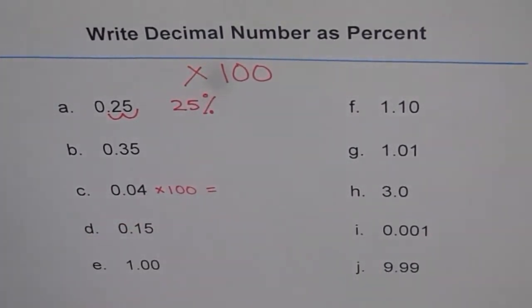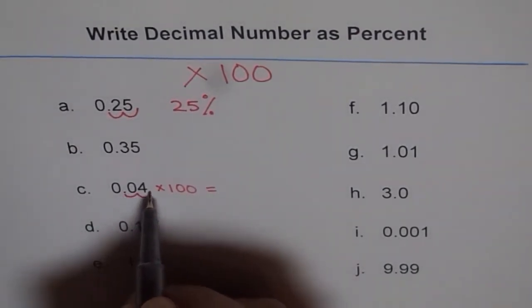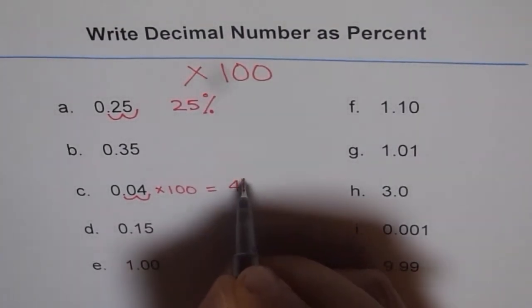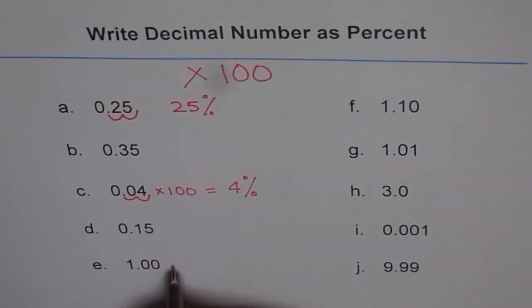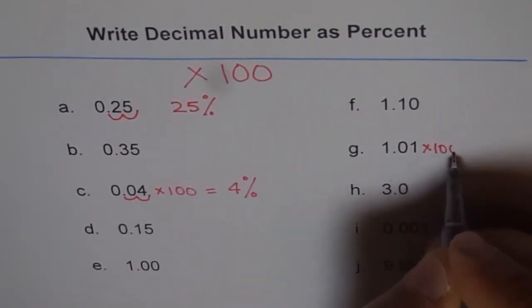Then it will give you percent. From decimal number times 100 means moving decimal two places, and you get 4.0—you can write 4%. How about this? If you times 1.00 by 100, you get 100%. Let's do this one now. If I times that by 100, what happens?